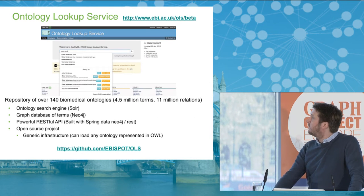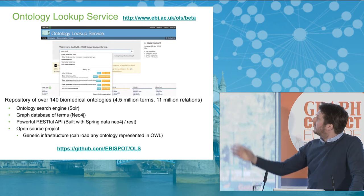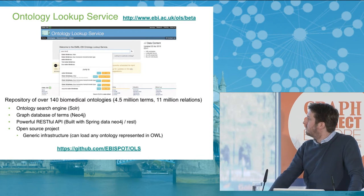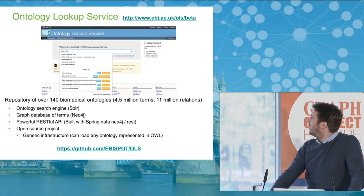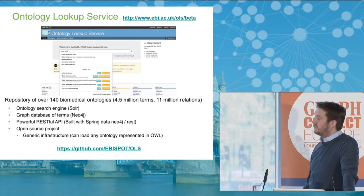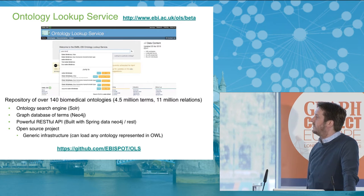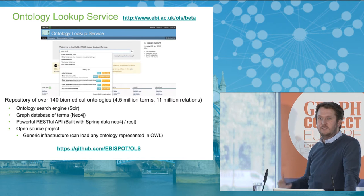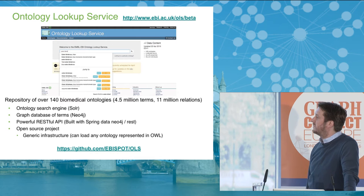One of the services we've had at the EBI for over 10 years has been an ontology lookup service, and we've just basically rewritten this over the last year. It's currently in beta - we're releasing the new site this week. It's a repository containing 140 biomedical ontologies that we pull in from all the external sources where these are published, representing about 4.5 million biological concepts and 11 million relationships. We use a Solr index for text search, a Neo4j graph database for handling all the connectivity of the terms, and the Spring Data platform to build the REST API. The majority of our usage comes through the REST API - our users are really interested in programmatic access to these ontologies.